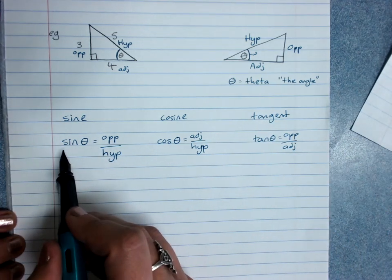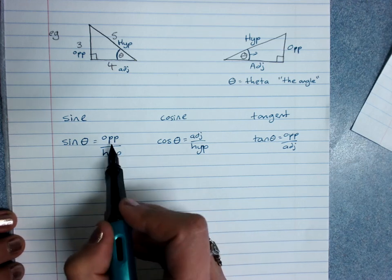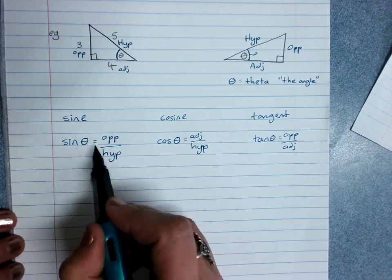When you write the ratios, you must write sine theta equals opposite over hypotenuse, or at the very least, O over H. You must have sine theta.